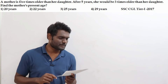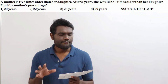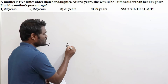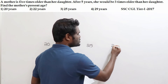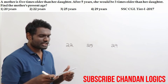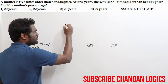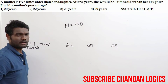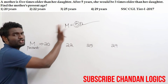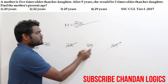A mother is five times older than her daughter. After five years, she would be three times older than her daughter. Find the mother's present age. The options are 20, 22, 25, and 29 years. Since the mother is five times older than her daughter, her present age must be a multiple of 5. 20 is a multiple of 5 — yes. 22 — no. 25 — yes. 29 — no. So the answer is either 20 or 25.